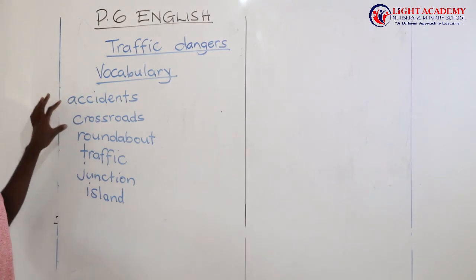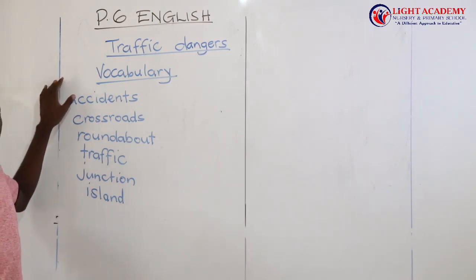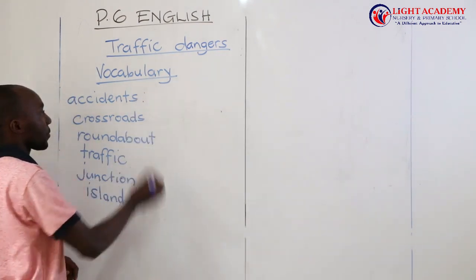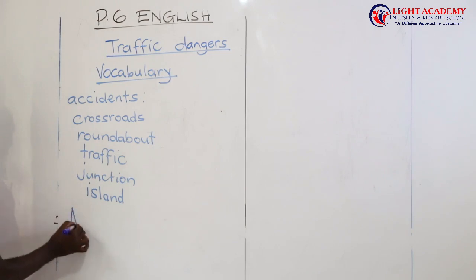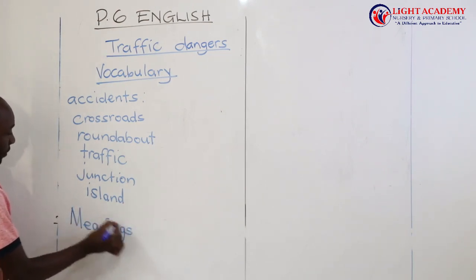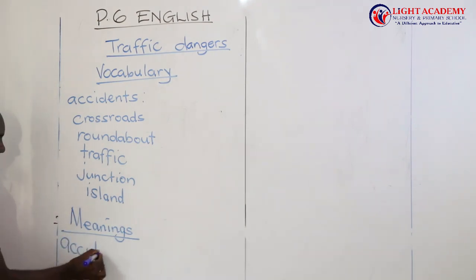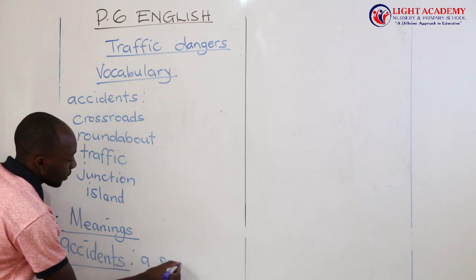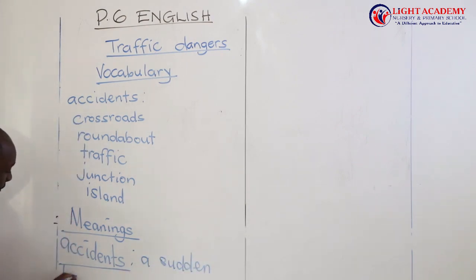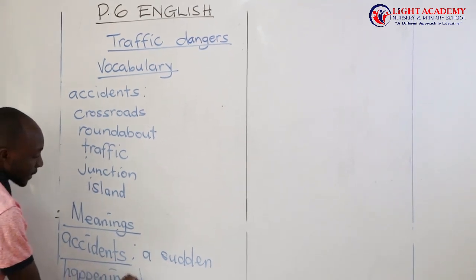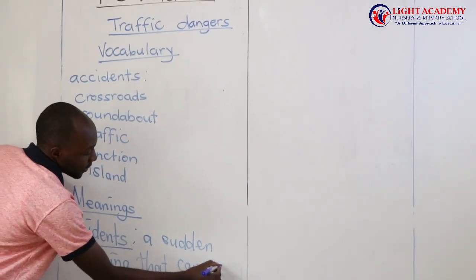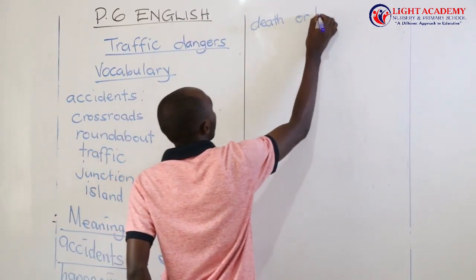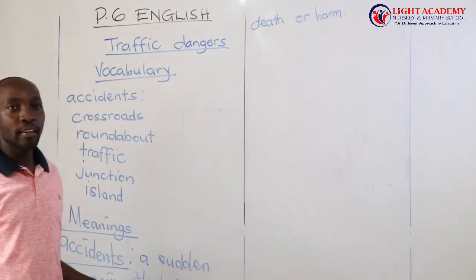Let's first look at only these ones. We are going to look at their meanings. For example, we are going to look at accidents. Accident — you can define it as a sudden happening that can cause death or harm. That's the way we can define an accident.